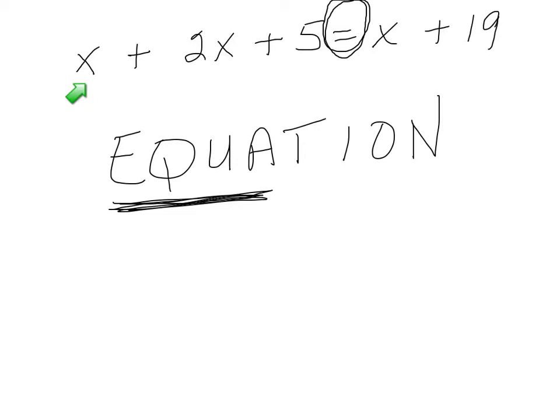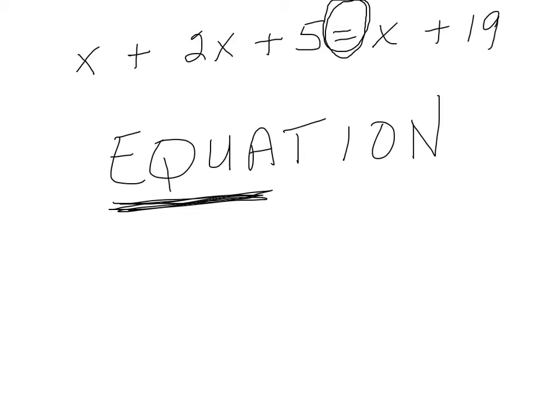So we're going to try to solve for x. The first thing we're going to do is set up our equation on our hands-on equation board using pawns and dice. So let's take a look here. Here we have x, which we're putting one pawn, plus 2x, so we're putting two more pawns, plus 5, so we're putting our cube.